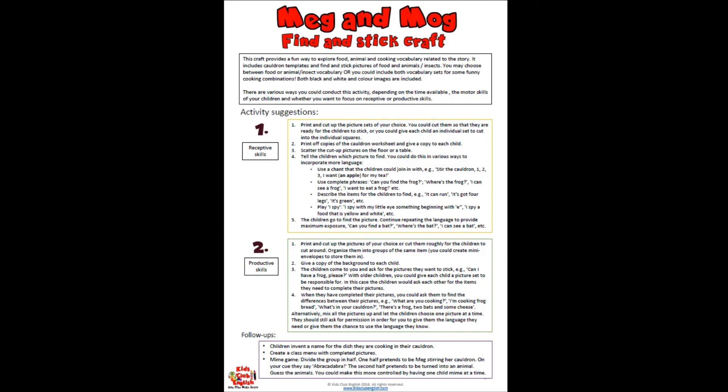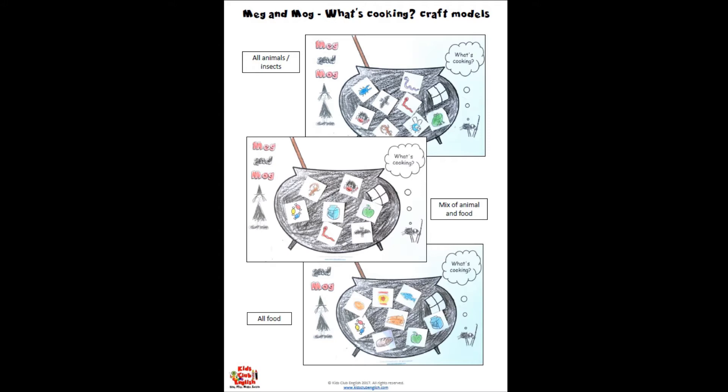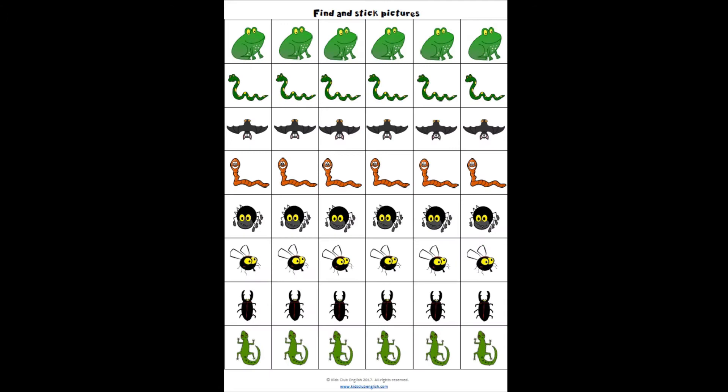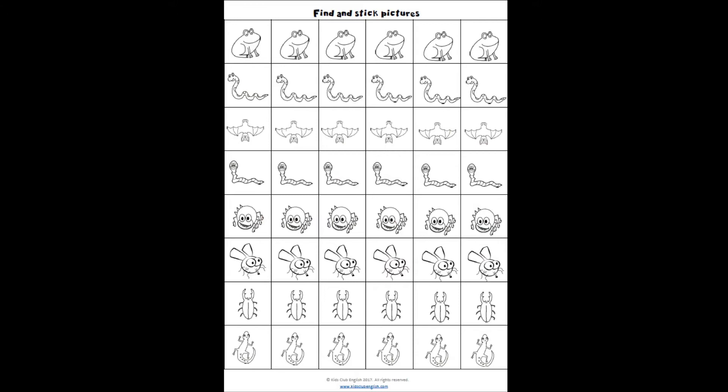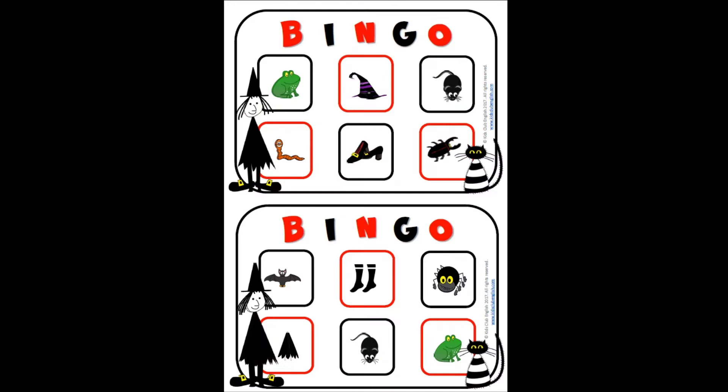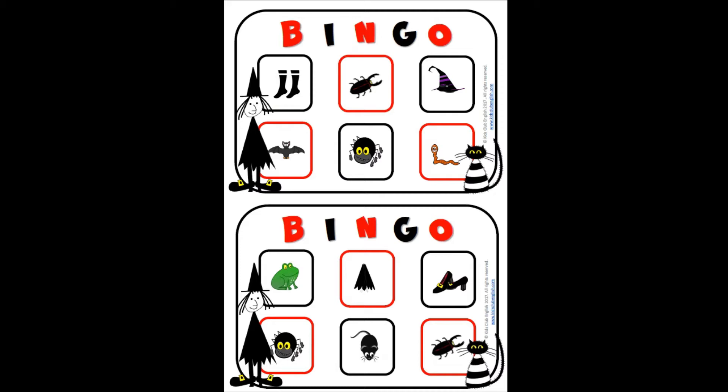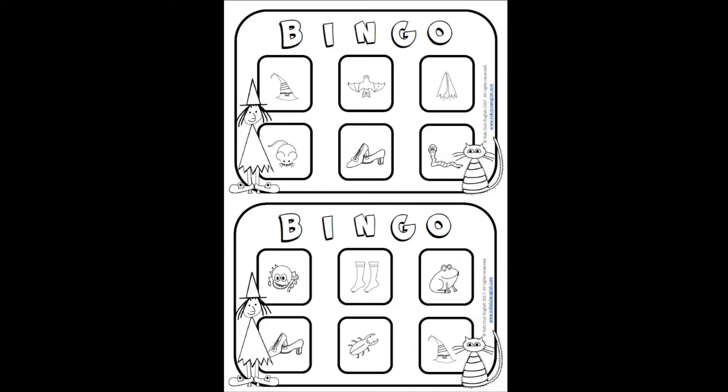Then the finding stick craft — you've got a picture of a cauldron and the students need to listen or ask you for the different elements they need to put in their cauldron to make their spell. Then we've got bingo games and crafts — you can either print and just play these, with smaller boards with only six items, focusing on the clothes and animals in the story, and we also have bigger boards with 12 items.